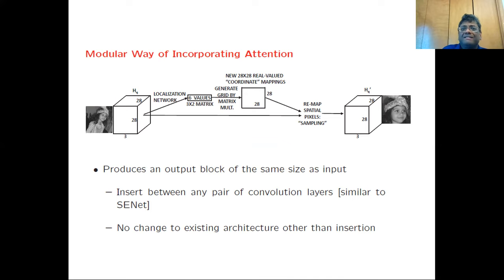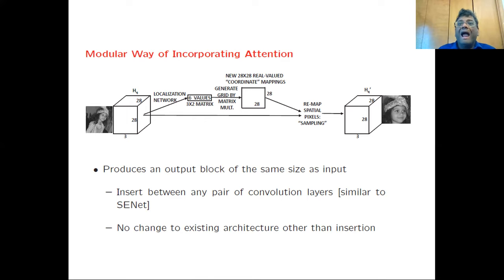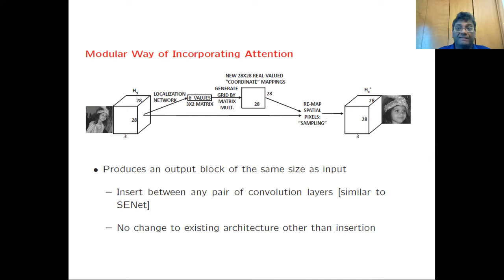What the spatial transformer does is that you can take any existing neural network and incorporate the attention module between a pair of convolution layers. You take one convolution layer, incorporate the spatial transformer module, and it will produce another convolution layer of exactly the same size. Note that SE-Net also does exactly the same thing, except the nature of the module is different. Other than this insertion of the module between layers, there's no change to the existing architecture. In that sense, the approach has some characteristics of a meta-learner — you have a module you can incorporate between any pair of layers and enjoy performance improvements for whatever architecture you started with.